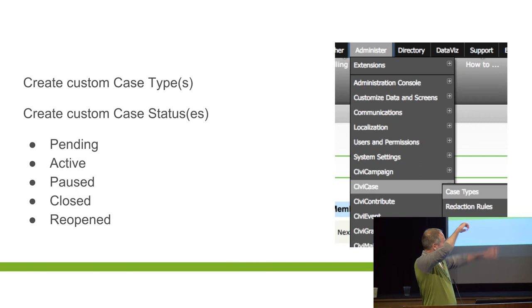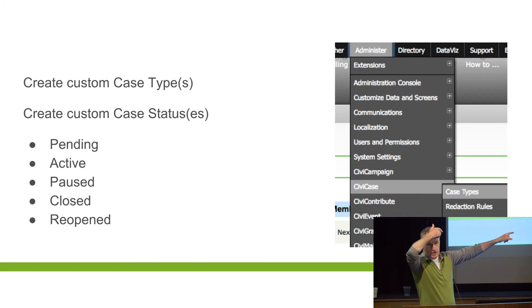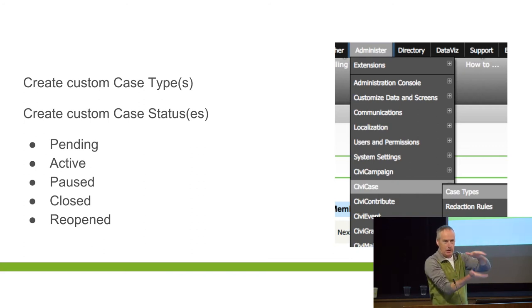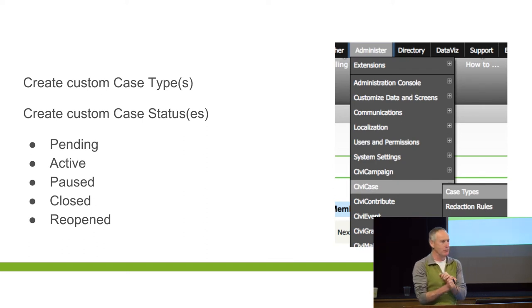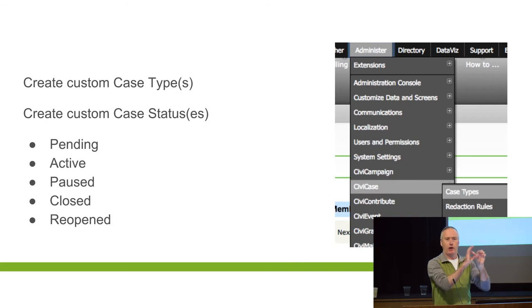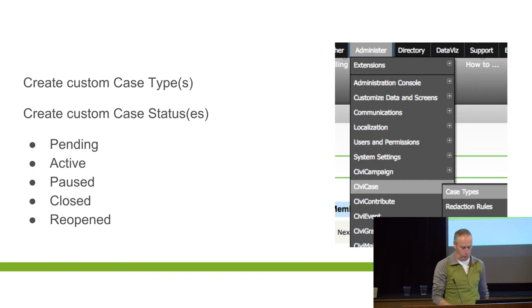Under Administer, you'll see CiviCase with case types and case statuses. You might want case statuses because some case types might need a 'pause' mode or similar. You can also set up redaction rules — I've done CiviCase for 12 clients and thankfully none have needed it — but it's there so that if you need to produce a report of a case, you can specify which fields get redacted out. Redaction basically means whited out, so you can't read it.